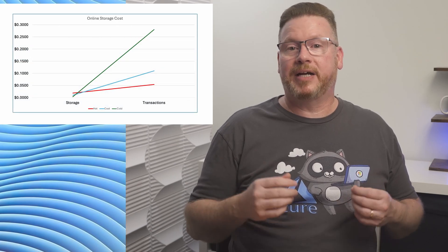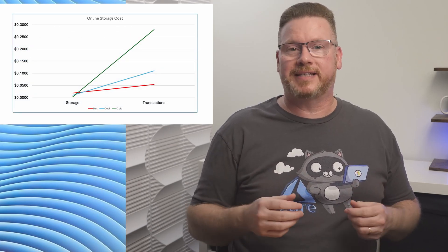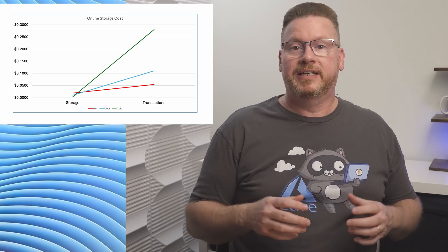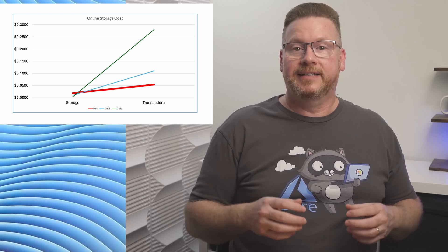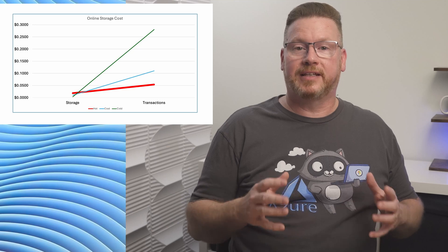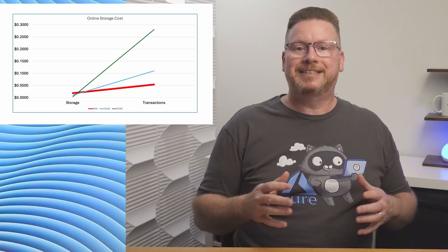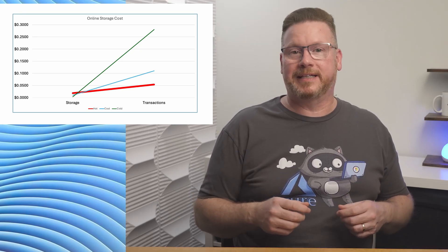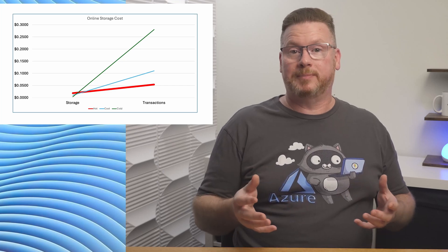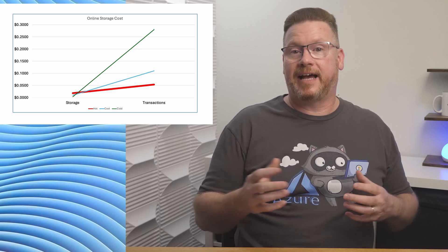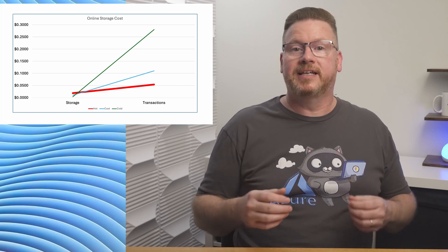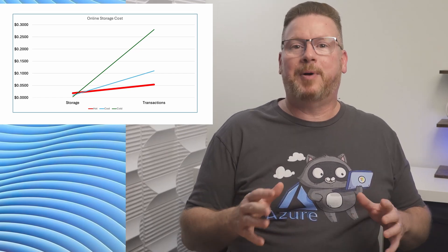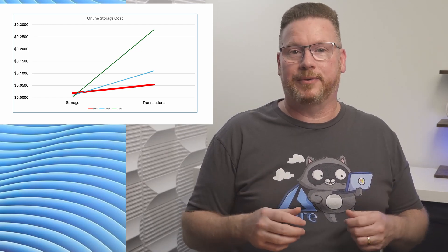Let's take a look at a chart that compares the cost of storing data versus transactions. Starting with the three online options: the orange line is the hot tier, which has the highest storage cost and the lowest transaction cost. It's important to use the hot tier for any data that's accessed frequently — blob content for an active website, for example. Although it has a higher storage cost, the savings in transaction cost make it a better option.